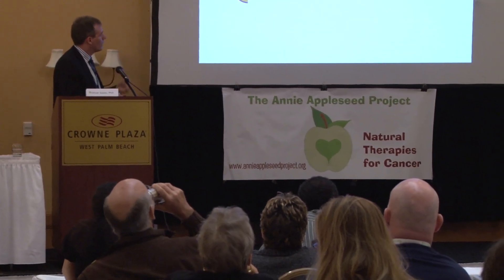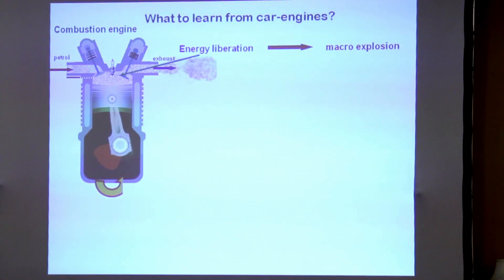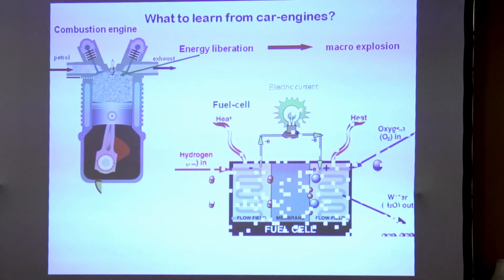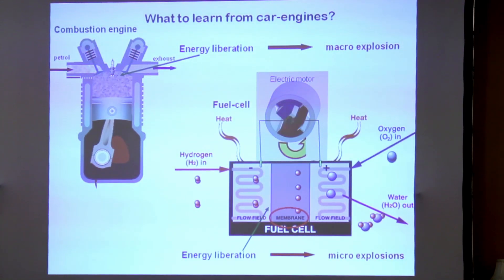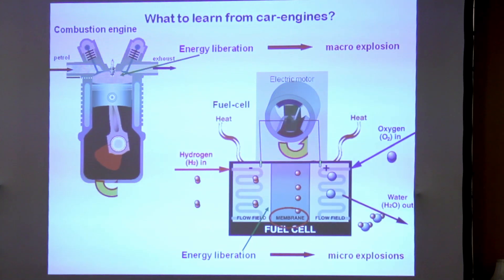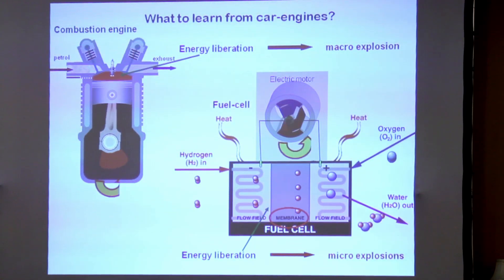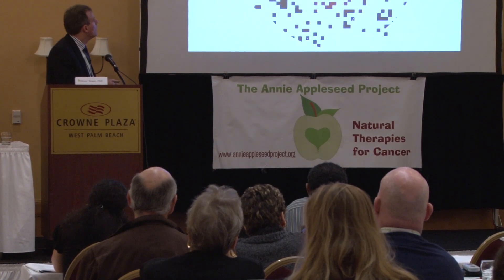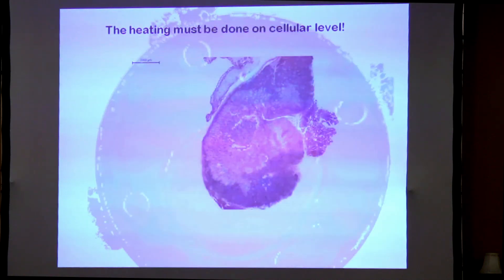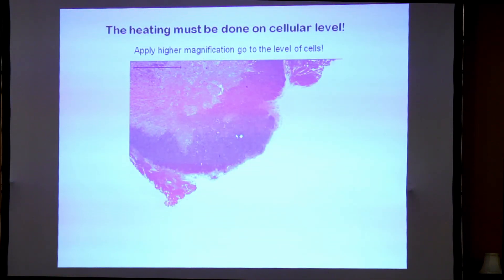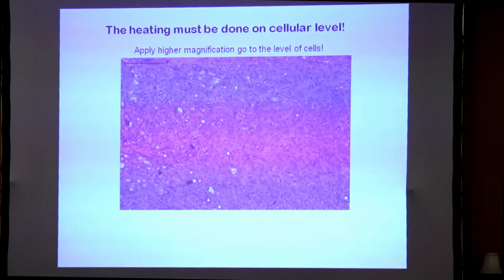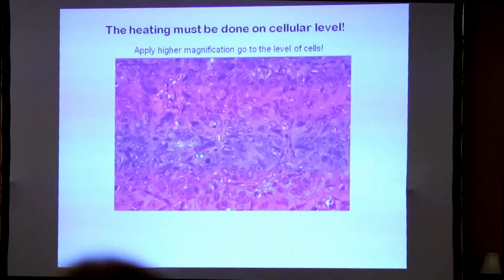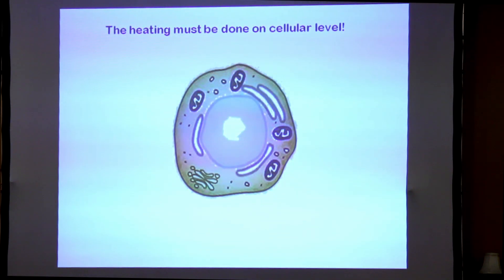What can we learn about giving energy? If we take a car engine, we have a macro explosion that moves the car. But there are new engine types that use a fuel cell — meaning micro explosions at the cellular level — which give much more energy with better effect and fewer side effects. This is what we want to achieve by moving from hyperthermia to oncothermia. We do not heat up the whole tumor area, but go deeper to the cellular level to find and deliver energy only to the tumor cells, resulting in less heat diffusion and better results.